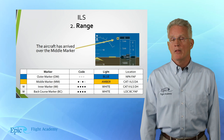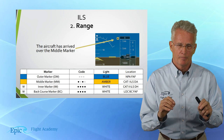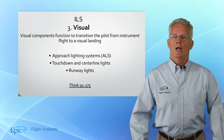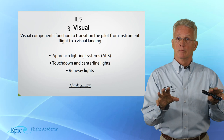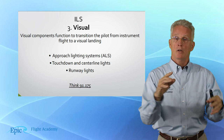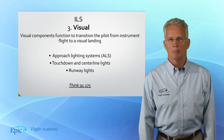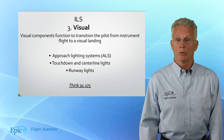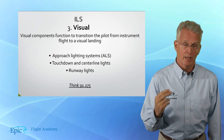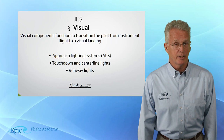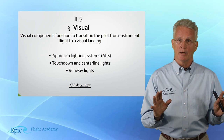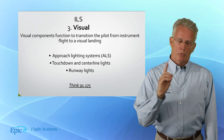The third component to the ILS is the visual component. The visual components function to help the pilot transition from instrument flight — where they're focused entirely on the instruments — to visual flight, where they're looking outside and will land the aircraft visually. The predominant component here is, of course, lighting: the ALS or approach lighting systems, touchdown and centerline lights, and runway lights. Remember from an earlier video we talked about FAR 91.175 and the requirements for visual contact with the runway. Review that video and this content with your flight instructor.